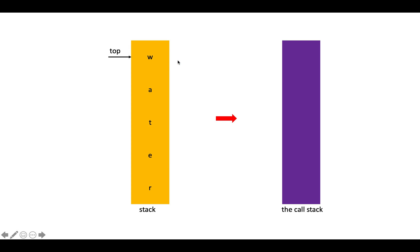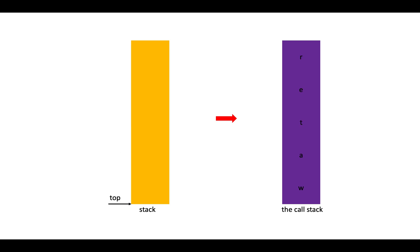Firstly we call the reverse method. Our job is to pop all the elements out and push them into our cross stack — note that this cross stack belongs to the reverse method. We pop W and push it onto the cross stack, then A, then E, T, R. After we have popped all these elements, we should call the insert bottom method to insert them back into the stack.